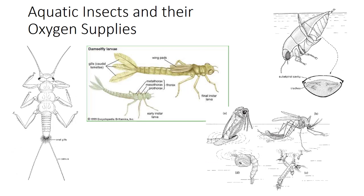Aquatic insects show several mechanisms to cope with the much lower oxygen levels in aqueous solutions. In a closed tracheal system, the most common way of increasing surface area for gaseous exchange is through gills. They are usually abdominal or caudal, but even anal, as in the stonefly nymph. For aquatic insects with open spiracular systems, there is a range of possibilities for obtaining oxygen. Aquatic insects also exhibit a variety of ventilation behaviors that disrupt the oxygen-depleted boundary layer by rippling the water.